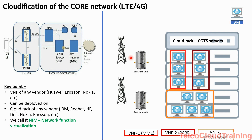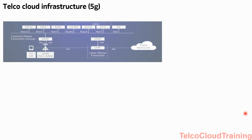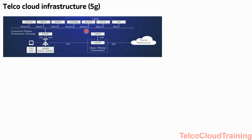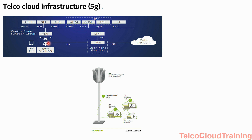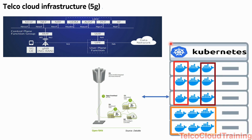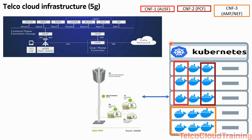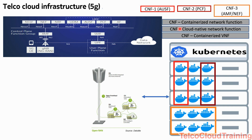A VNF of any vendor can be deployed on a cloud rack of any vendor — we call this NFV, Network Function Virtualization. This was the trend in 4G, where the RAN was still proprietary and the core network was majorly cloudified. Going forward in 5G, one key change is that VNFs will now be called CNFs — Containerized Network Functions, or Cloud Native Network Functions, or officially Containerized VNFs.